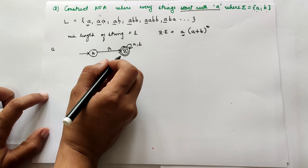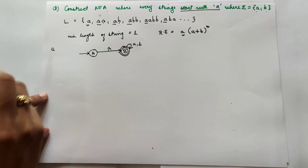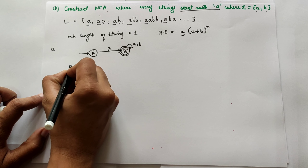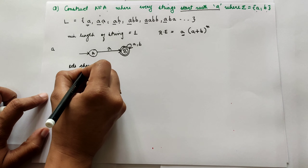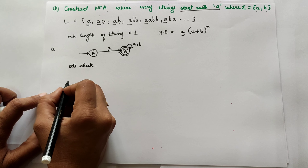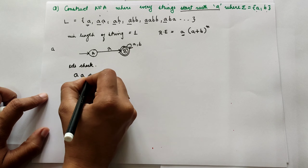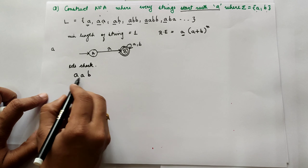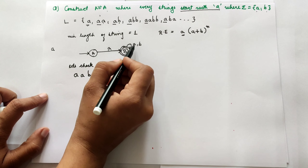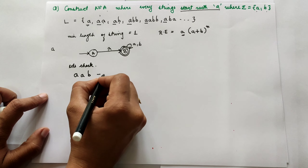This is the non-deterministic finite automata for strings starting with A. Let's check some strings. For example, the string A, A, B — starting from the initial state, we read A moving to the accepting state, then A (self-loop), then B (self-loop). It is accepted.